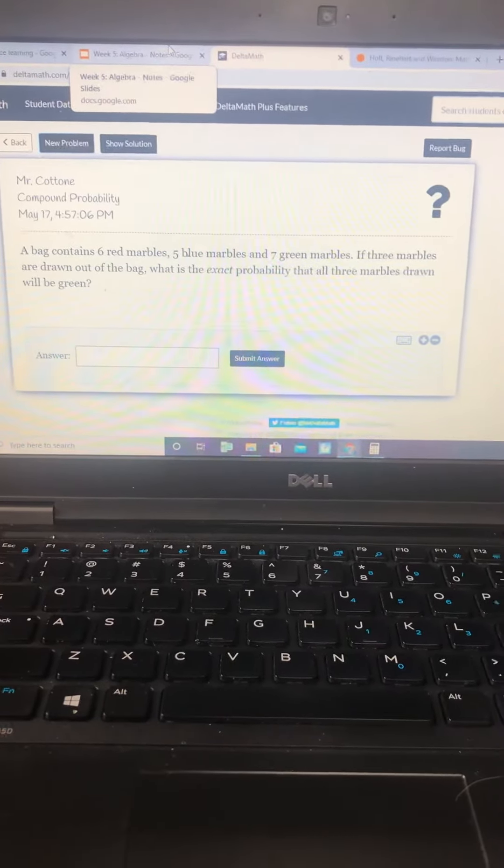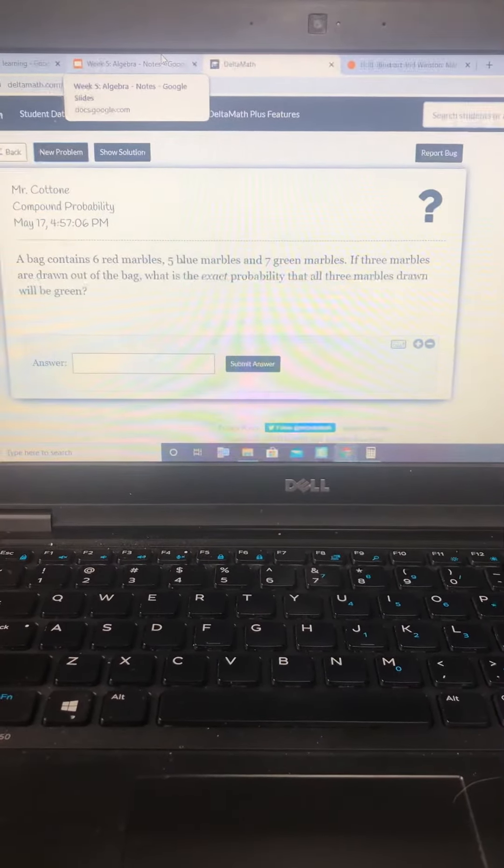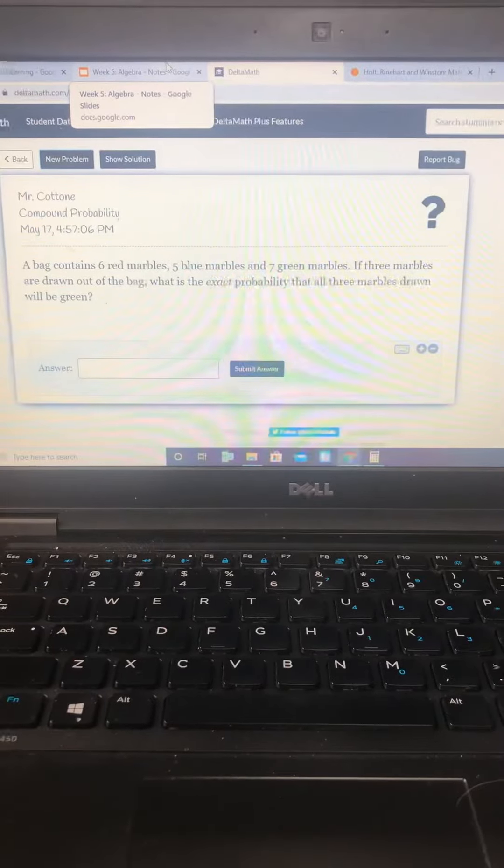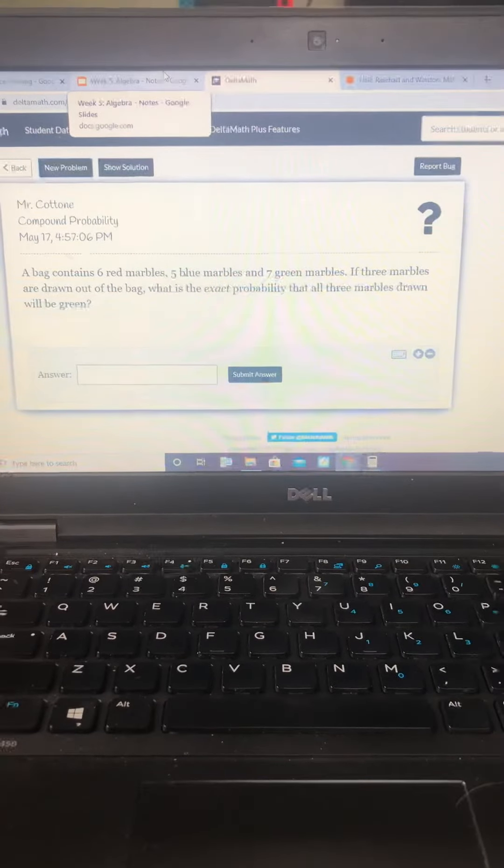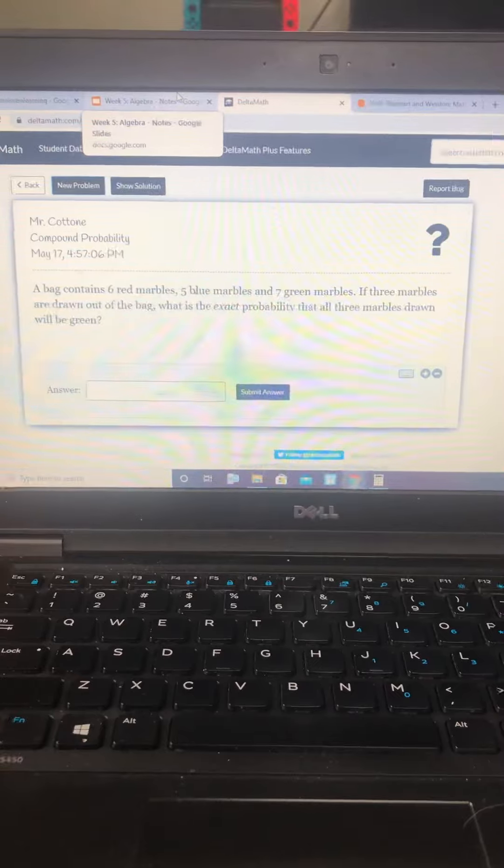This question says, a bag contains six red marbles, five blue marbles, and seven green marbles. If three marbles are drawn out of the bag, what is the exact probability that all three marbles drawn will be green?